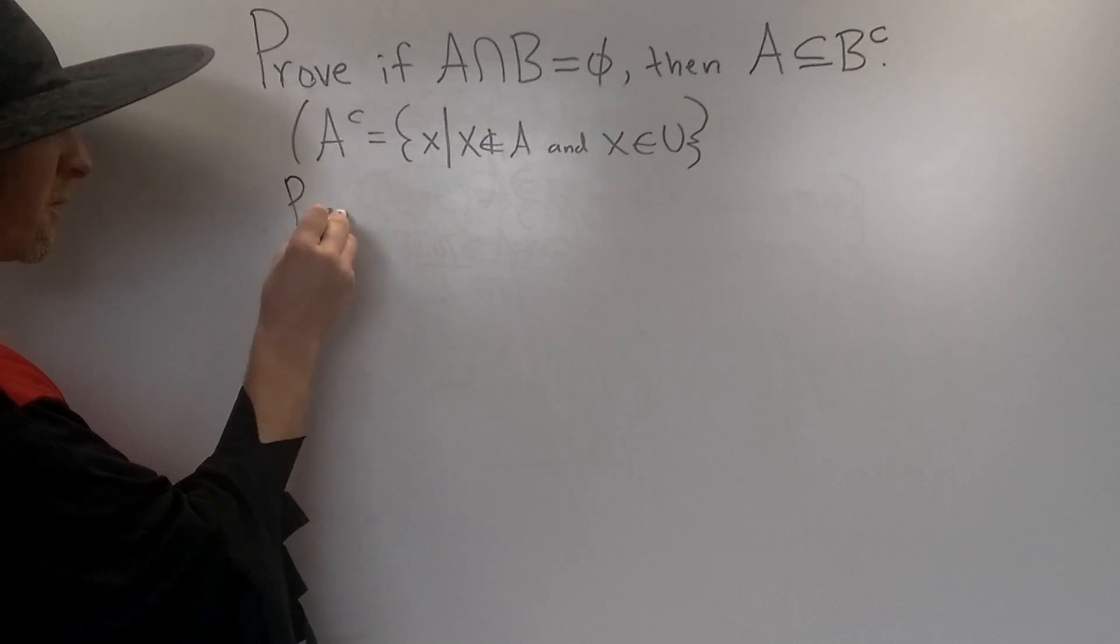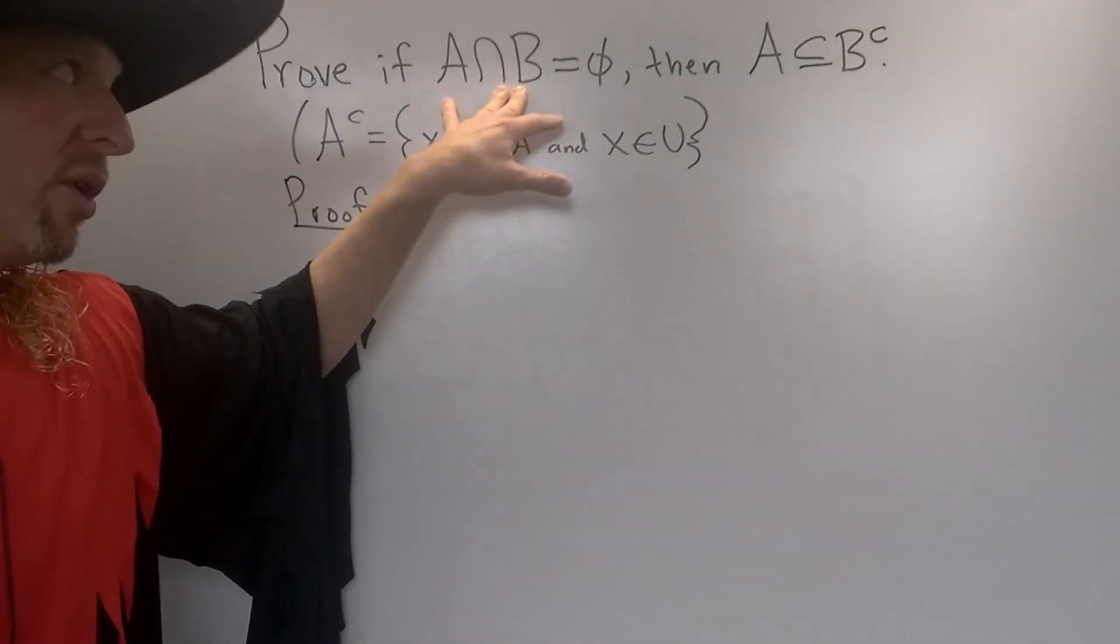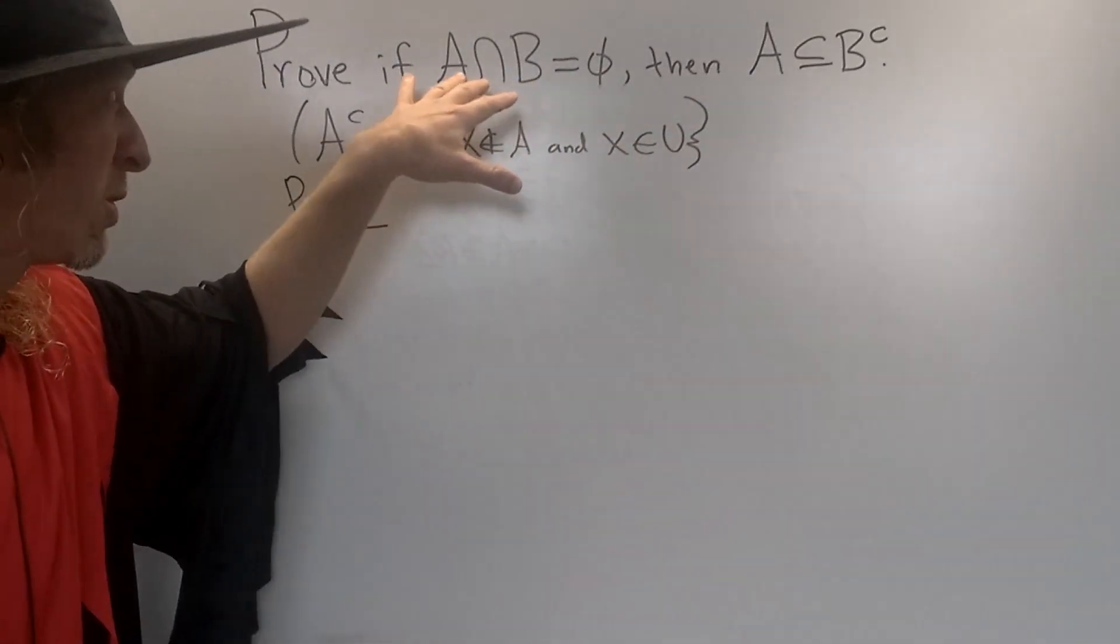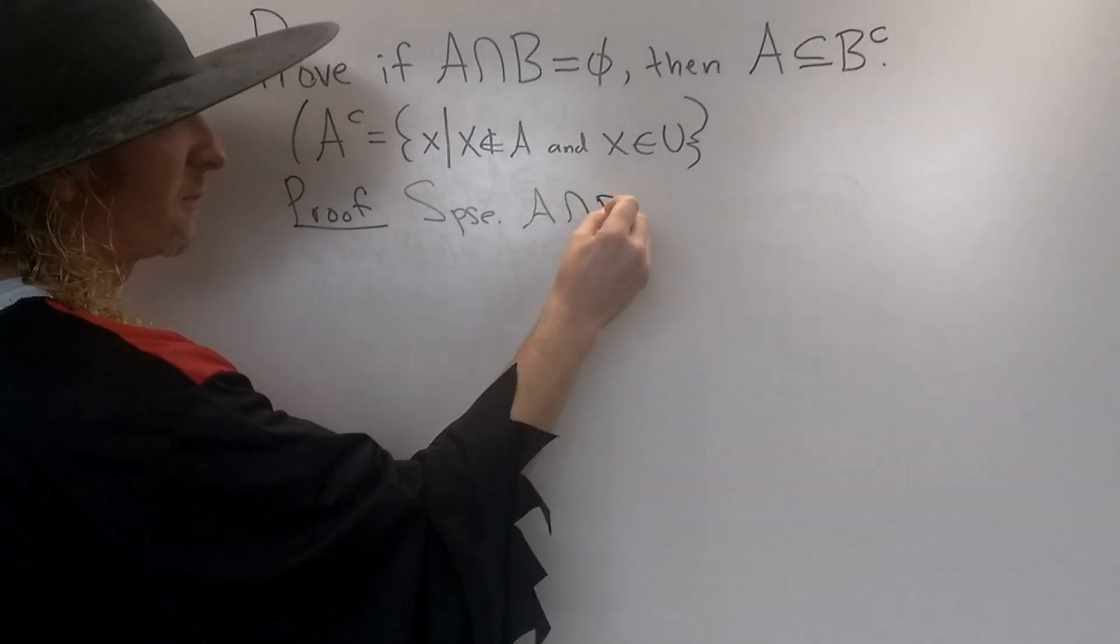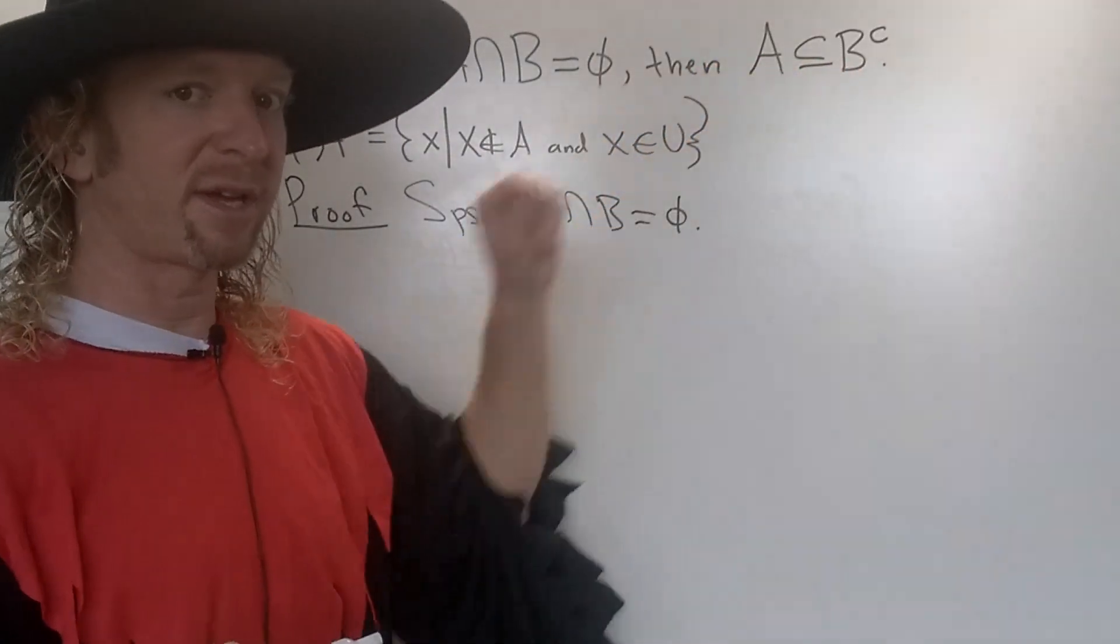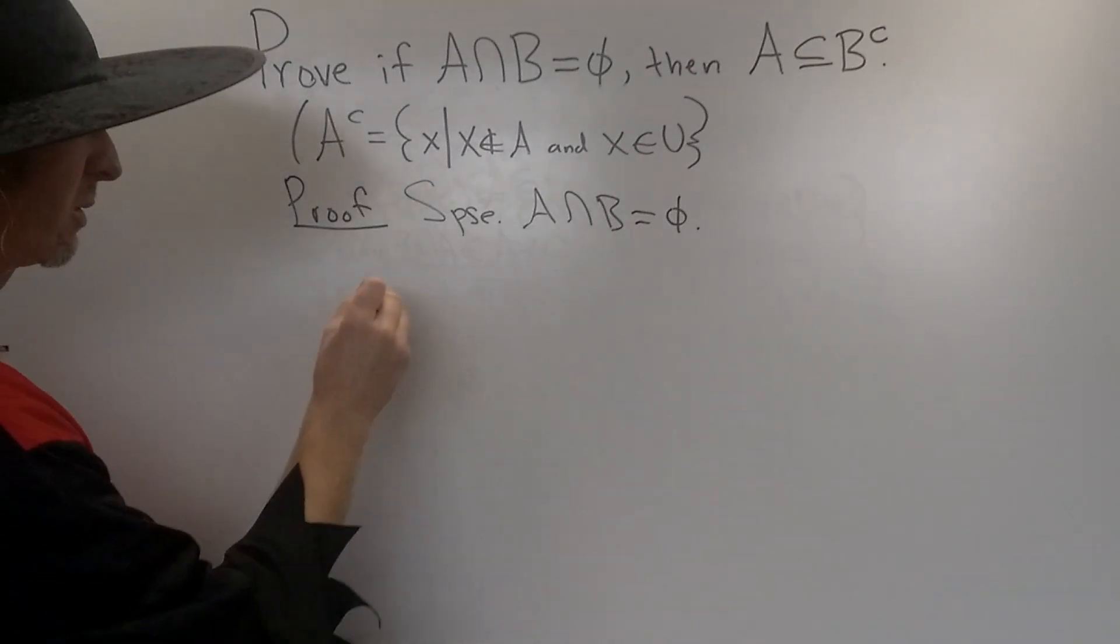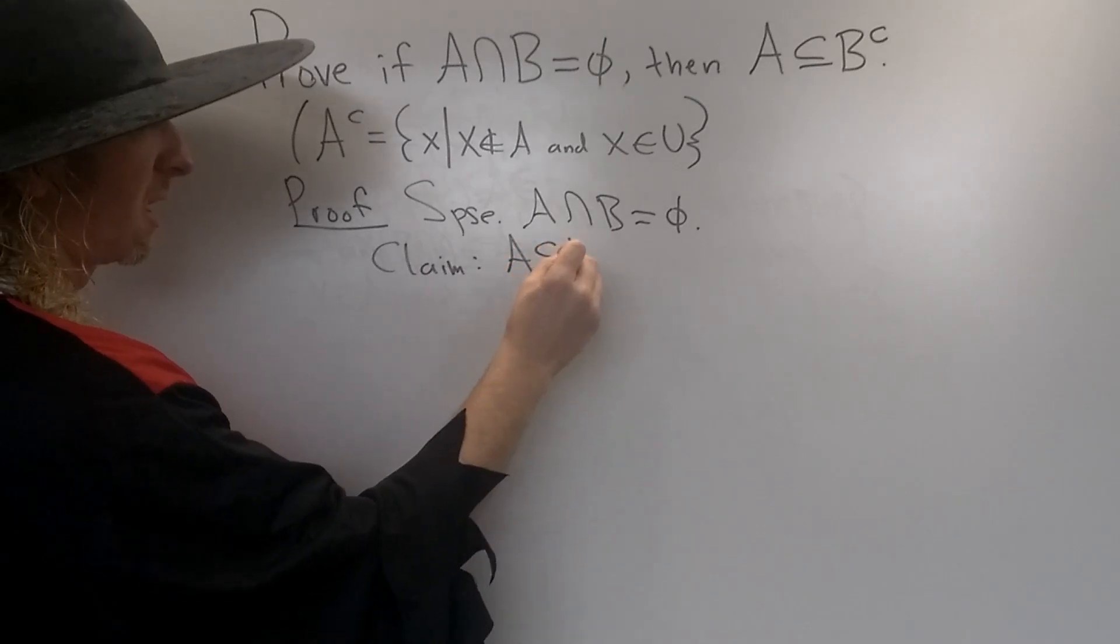Okay, so let's go ahead and go through the proof. So to start the proof, we'll assume that this is true, and then we have to show that this is true. So we'll start by supposing A intersect B is equal to the empty set. And the claim is that A is a subset of B complement.